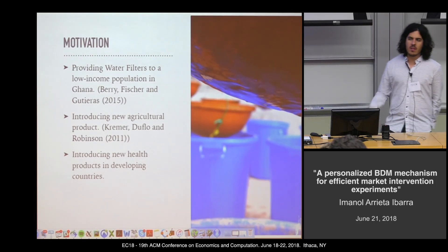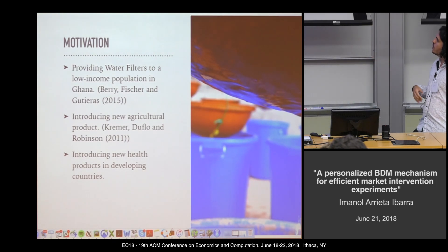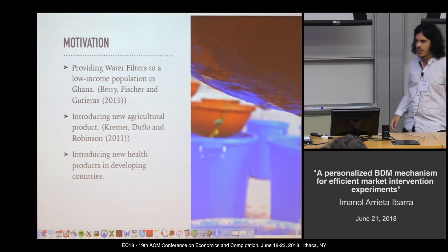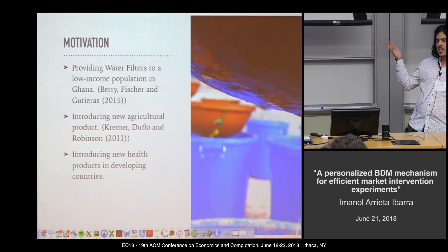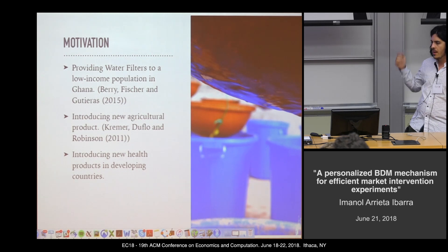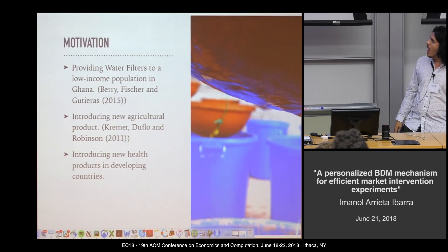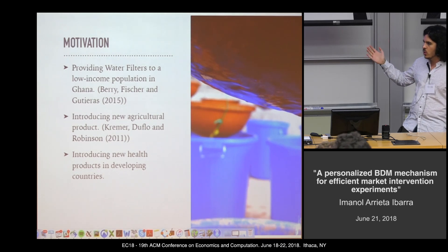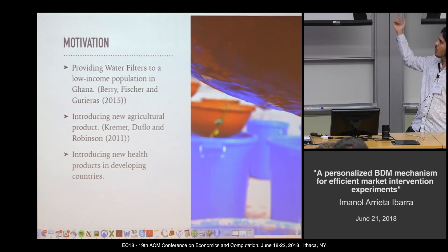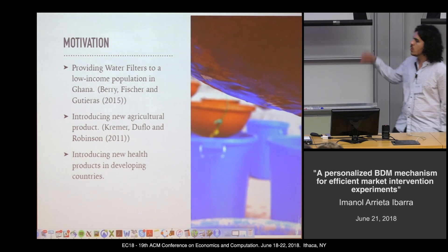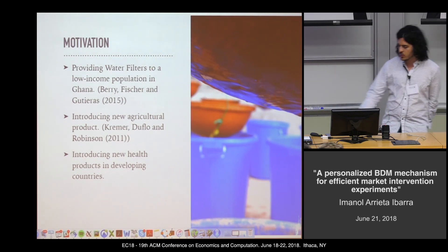The motivation behind our work comes from a paper by Barry Fisher and Gutierrez. They use the BDM, a second price auction mechanism, to give water filters in northern Ghana to low-income populations. Other settings in which these kinds of mechanisms can be used — where we need to estimate demand and causal effects — include introducing new agricultural products, as in Kramer, Duflo and Robinson, or introducing new health products in developing countries.